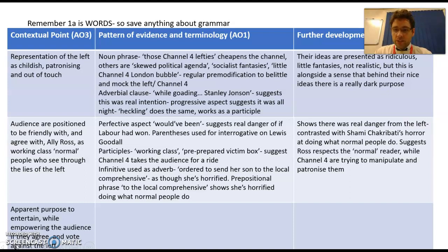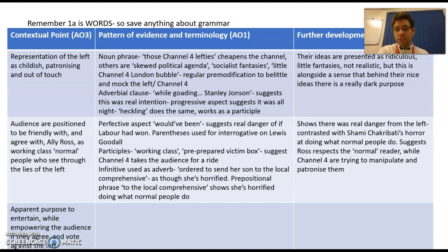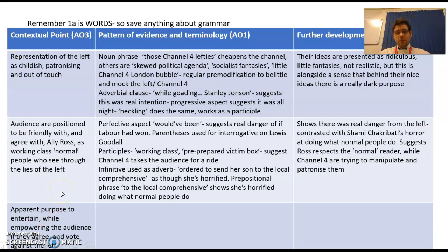So where do we go with that? Ali Ross suggests there's a real danger from the left - all these people are horrible people. He contrasts Shami Chakrabarti's horror at doing what normal people do with the sense that there's real danger - 'it would have been intolerable,' these people are skewed, they've got an agenda. He contrasts what he sees as the real danger of the left with Shami Chakrabarti's thought of danger at the local comprehensive. He's suggesting he's on a level with us - 'I'm like you, I might have gone to the local comprehensive. But Channel 4 is trying to manipulate you, trying to patronise you.' If you want to have a go at writing that second paragraph or the third, those are the sorts of things you might put in there.